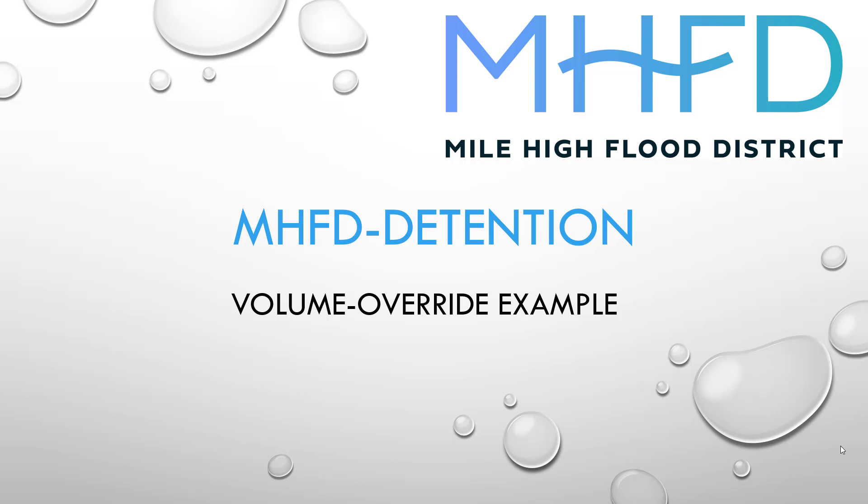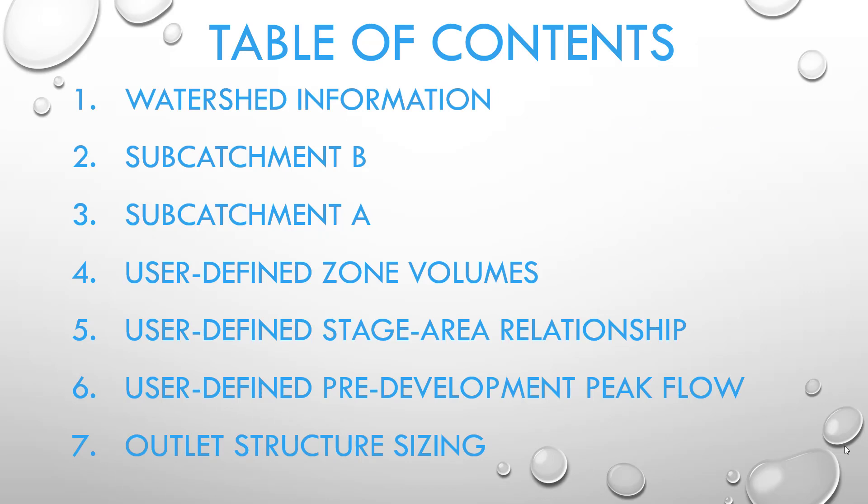The example in this video involves an extended detention basin that decides to over-detain the 100-year storm event with a reduced discharge rate in order to compensate for an adjacent facility that does not provide 100-year detention. If you are new to the Detention Workbook, I suggest you watch the overview and example videos first. This volume override video is broken into several chapters as seen in the Table of Contents, and the various chapter segments are visible on the video timeline.